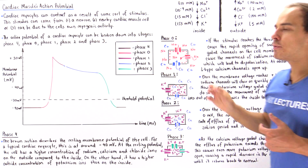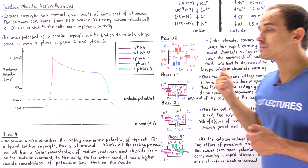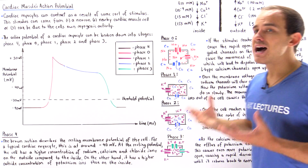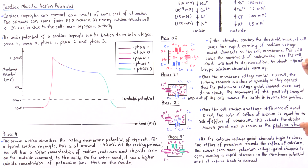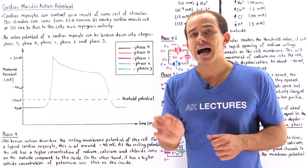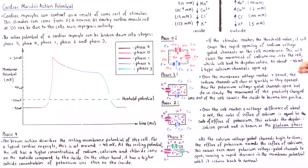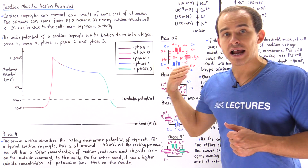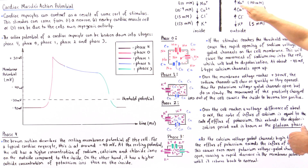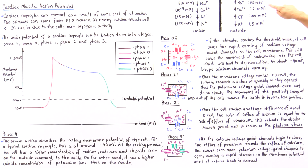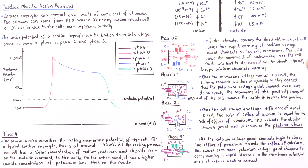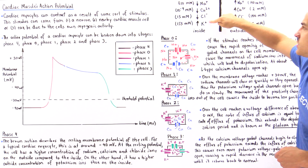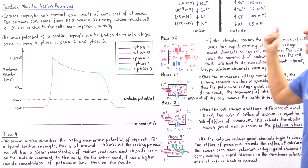The cell membrane is impermeable to ions because these ions carry charge. If a protein channel opens in the membrane, ions can move across it and will always move down their electrochemical gradient. For example, if sodium channels open, sodium moves from a higher concentration outside to a lower concentration inside. The same is true for calcium and chloride, but potassium moves in the opposite direction since it has a higher concentration inside than outside.